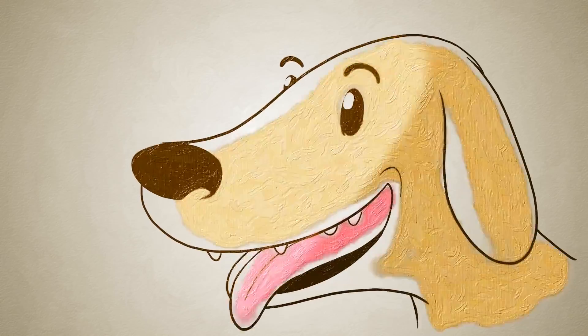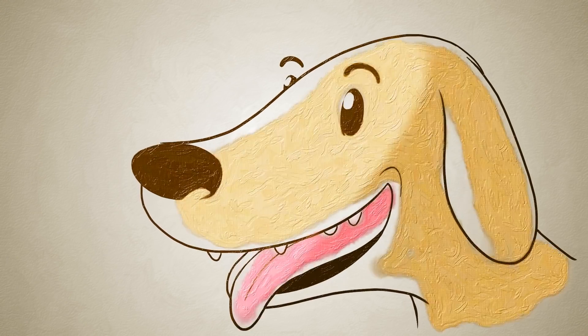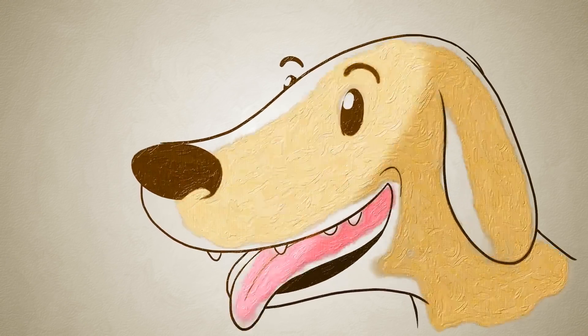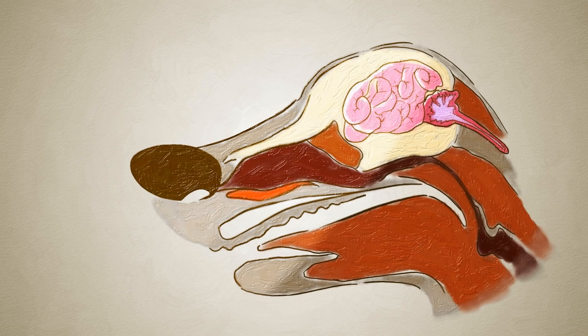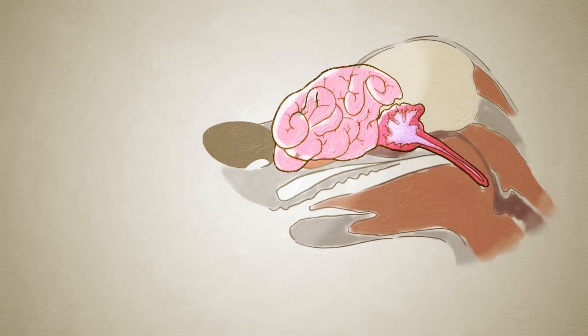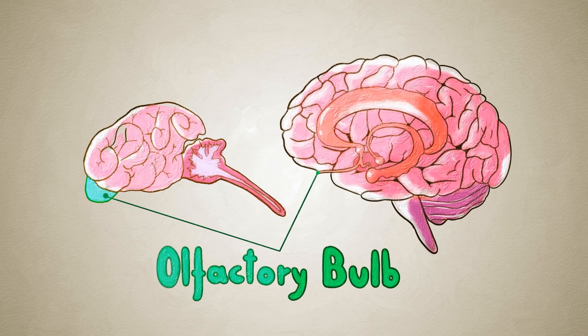But all that impressive nasal architecture wouldn't be much help without something to process the loads of information the nose scoops up. And it turns out that the olfactory system, dedicated to processing smells, takes up many times more relative brain area in dogs than in humans.